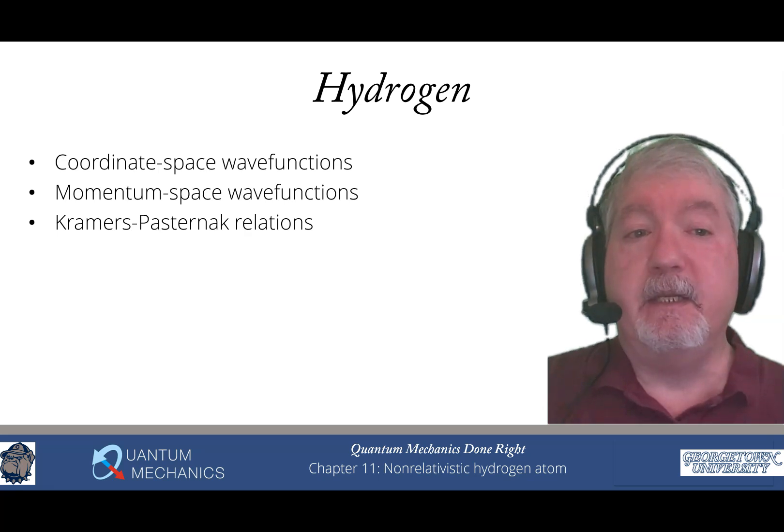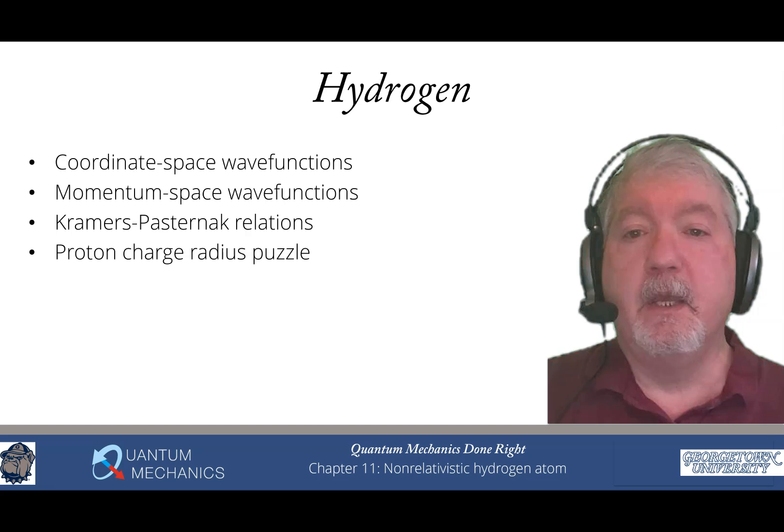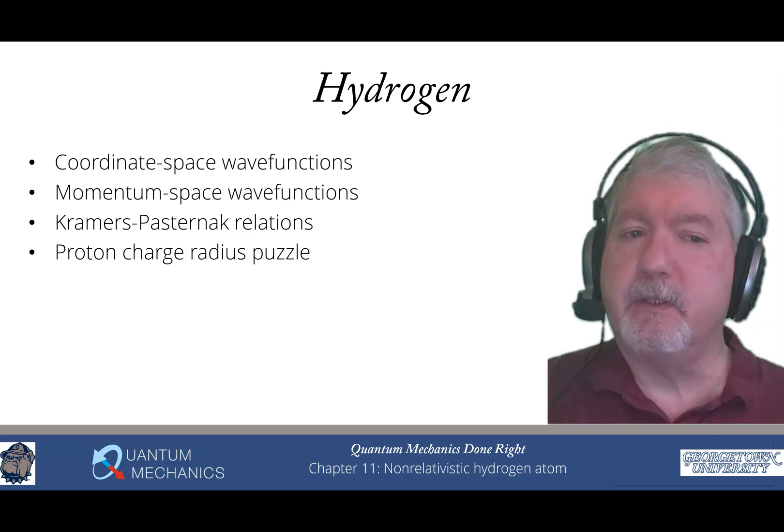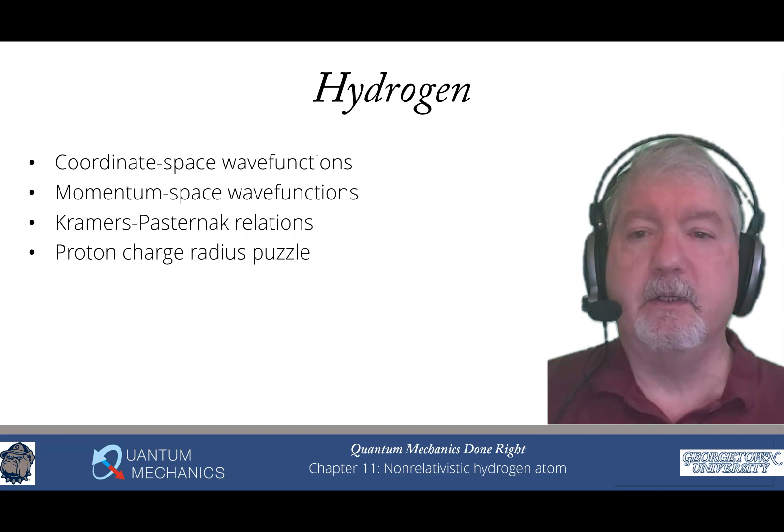We then get to the Kramer's Pasternak relations—interesting identities, recurrence relations between expectation values of powers of R for the hydrogen atom. They allow you to determine expectation values of R to the M for essentially any M. We then discuss important physics like the proton charge radius puzzle and how deuterium was discovered.